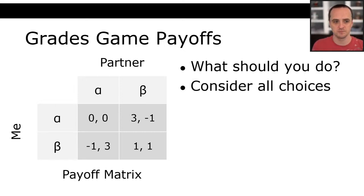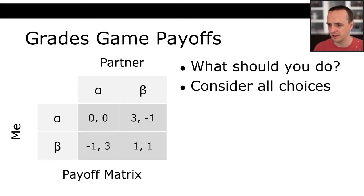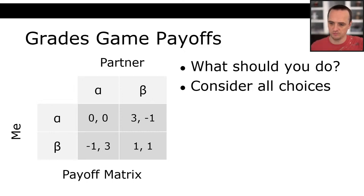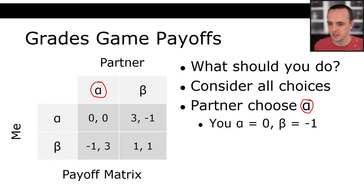In the Prisoner's Dilemma: if both stay silent, they both go to jail for one year. If both tell on each other, they both go to jail for two years. If one tells and the other stays silent, the one who ratted goes free and the other goes to jail for five years. Let's assign payoffs negatively correlated with prison terms: 1 year = negative 1, 2 years = negative 2, going free = 0, 5 years = negative 5.